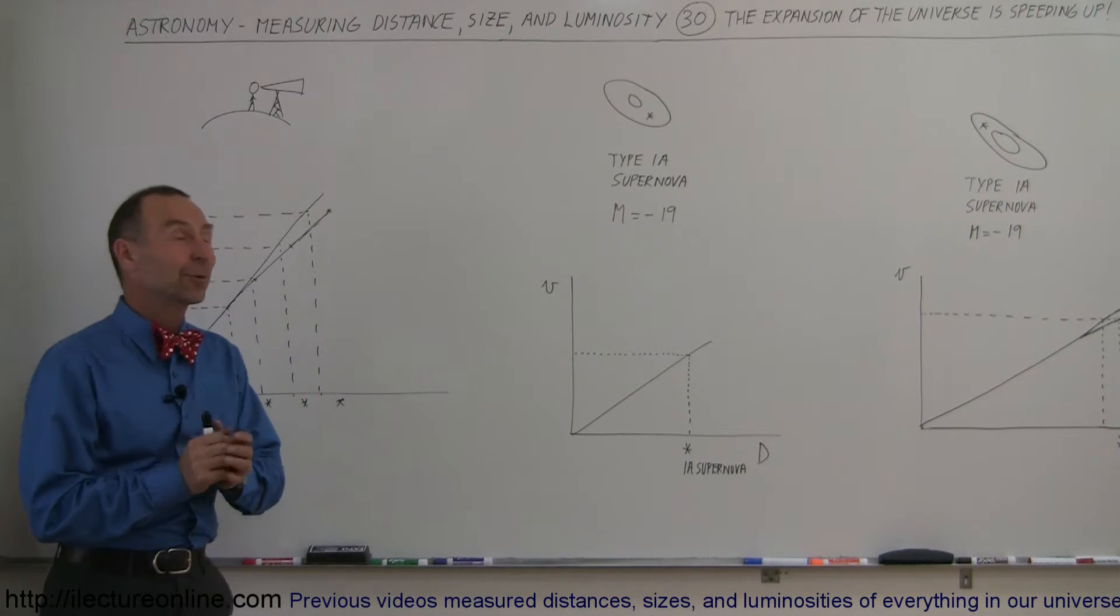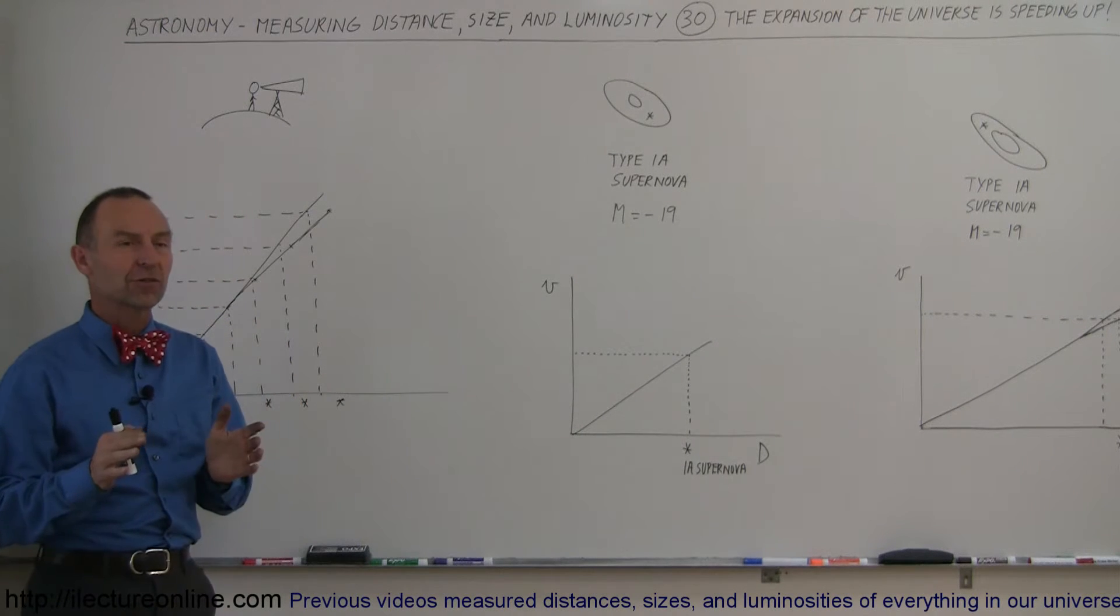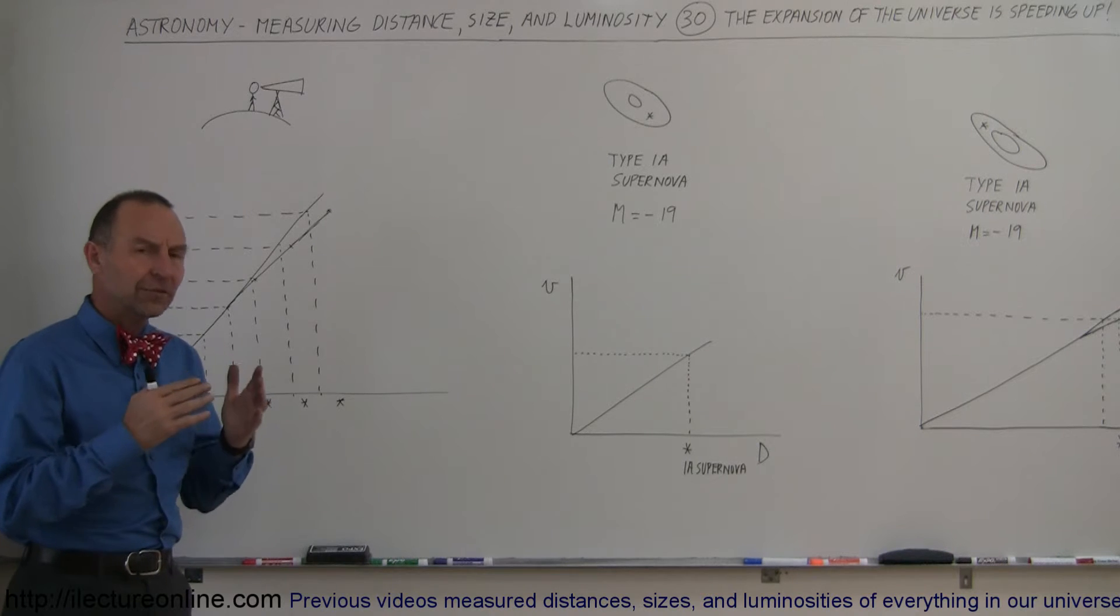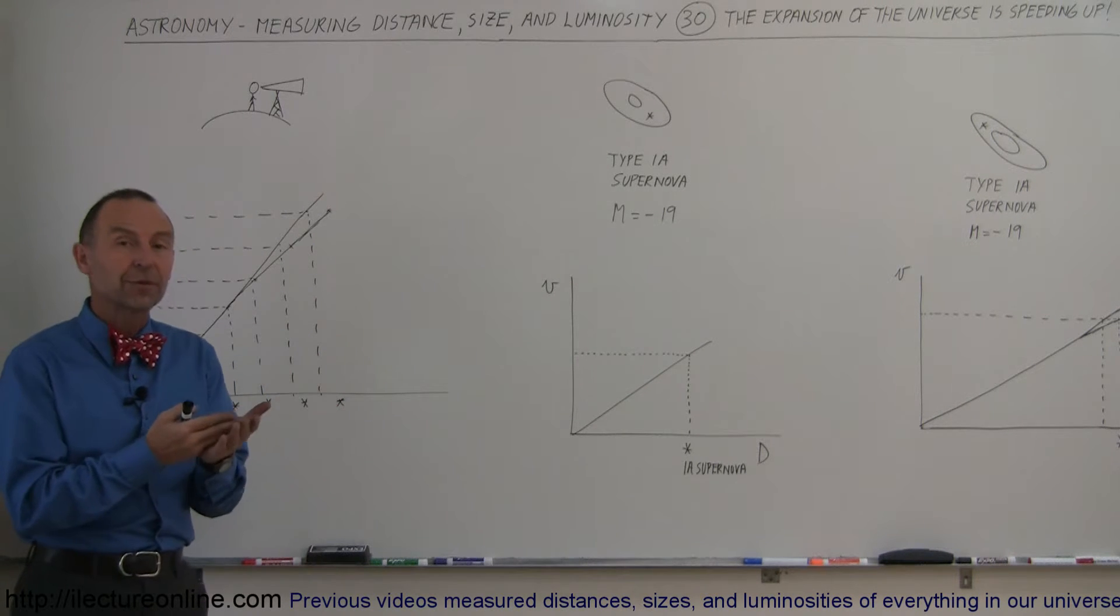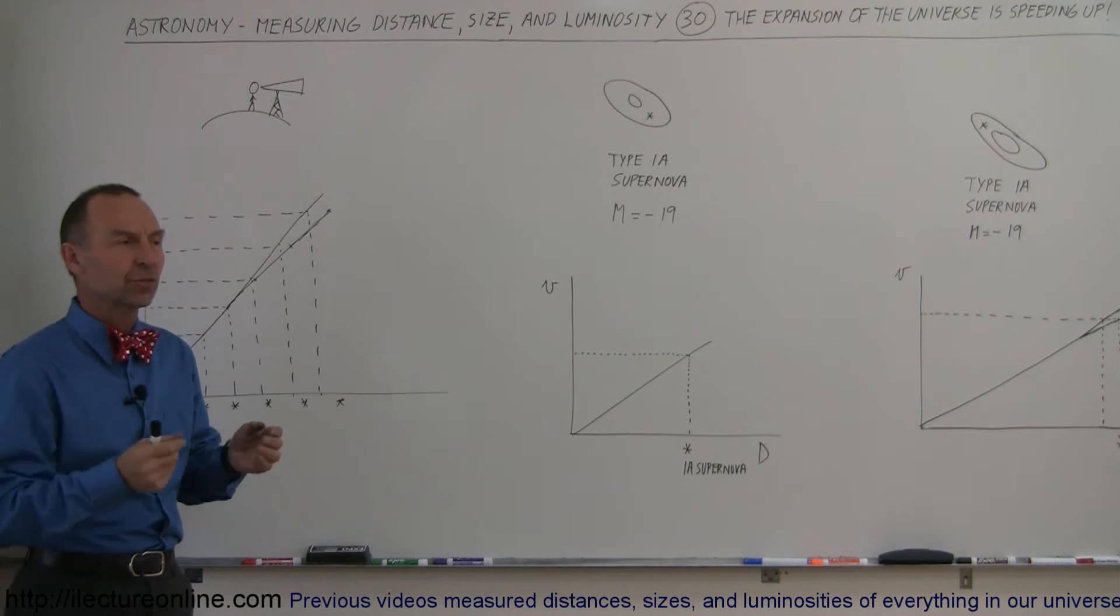Welcome to Electron Line and here we're going to talk about something very strange. We discovered that the universe is expanding and because of Hubble constant, we were able to figure out the rate of that expansion.